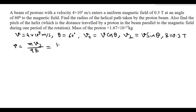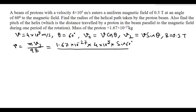Substituting values: m = 1.67 × 10⁻²⁷ kg, v_perpendicular = v sin θ = 4 × 10⁵ × sin 60°, q = 1.6 × 10⁻¹⁹ coulomb, and B = 0.3 Tesla. Calculating, we get the radius r = 0.012 meter.